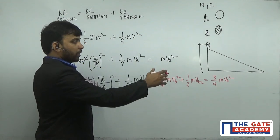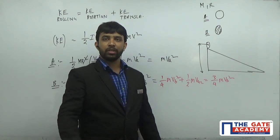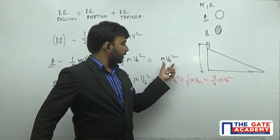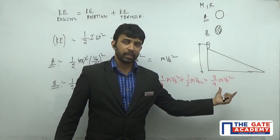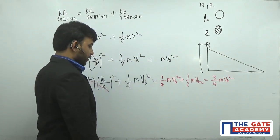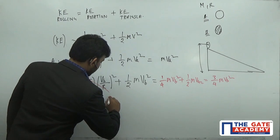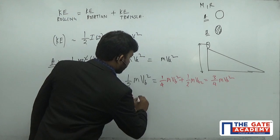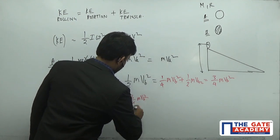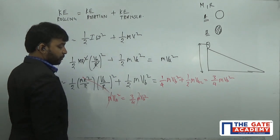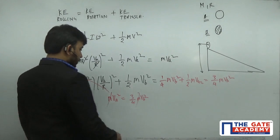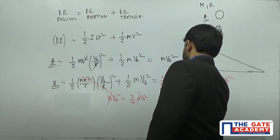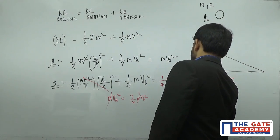Since both disks were released from the same height, they had the same potential energy, and all of it converts to kinetic energy. By the law of conservation of energy, equating: M V_A² = (3/4) M V_B². Since both have the same mass, we can cancel M, giving V_A to V_B equals the square root of 3 by 4.